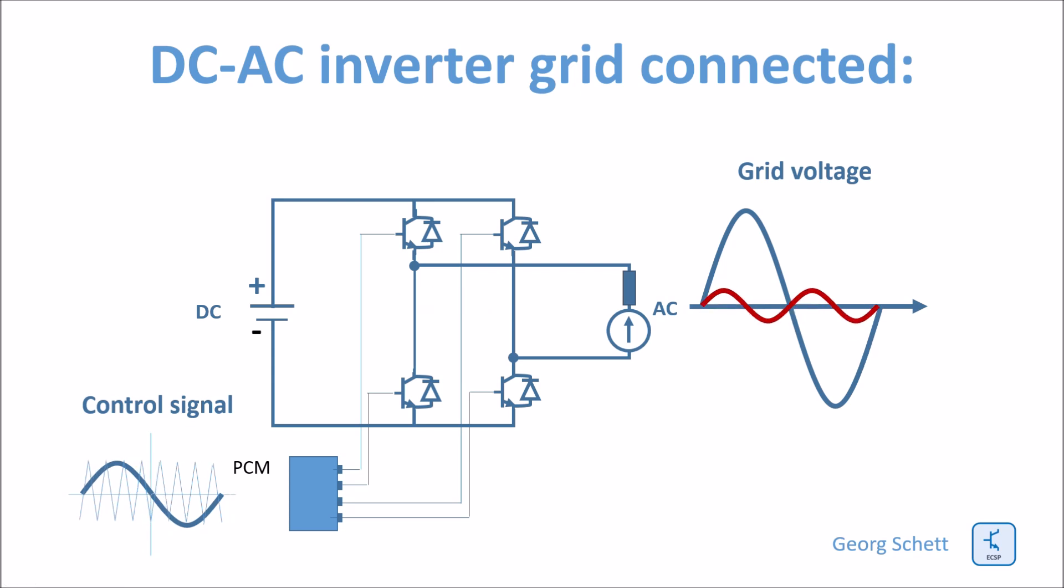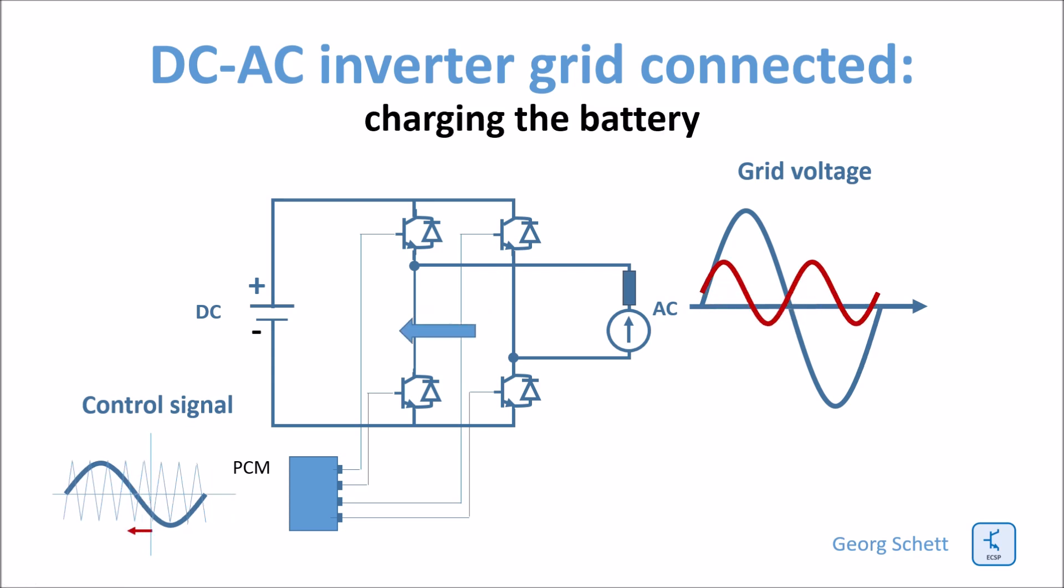So now I decrease again the phase shift and I go the other way around and now we see that with the grid I can now charge the battery. So this is how it works.